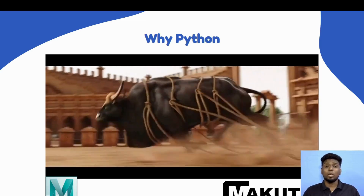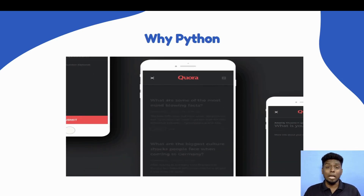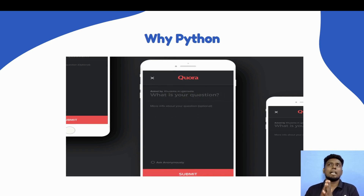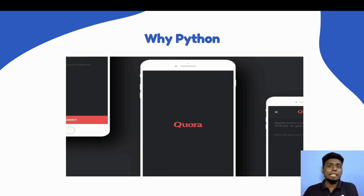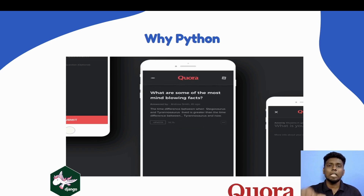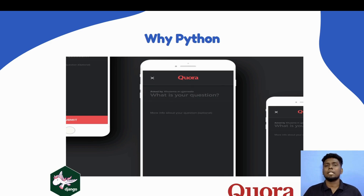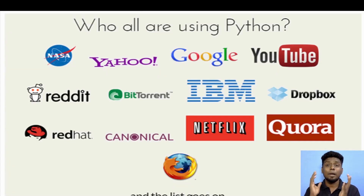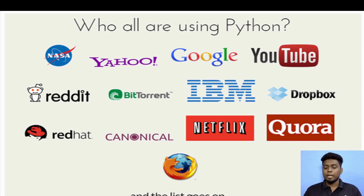Python is a great way to learn many things. Platforms like Quora are a very good way to learn. If you have questions, you can give suggestions. Companies like Google, YouTube, IBM, Netflix, and Quora all use Python.